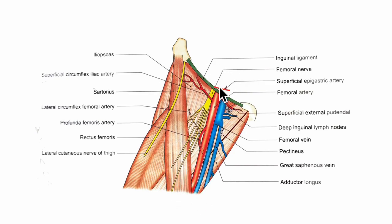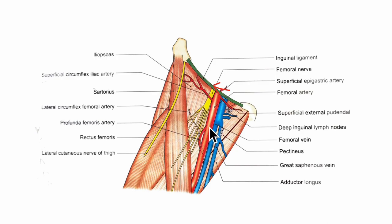Laterally, the femoral artery is related to the femoral nerve. The femoral nerve is lateral to the upper part of the artery. Lower down, the artery is related to the branches of the femoral nerve.